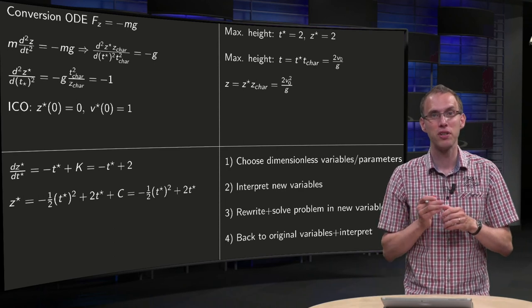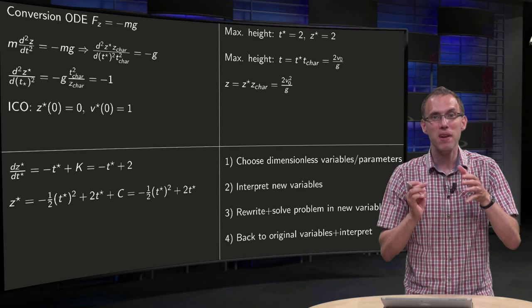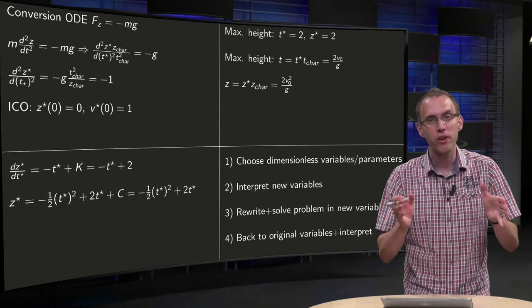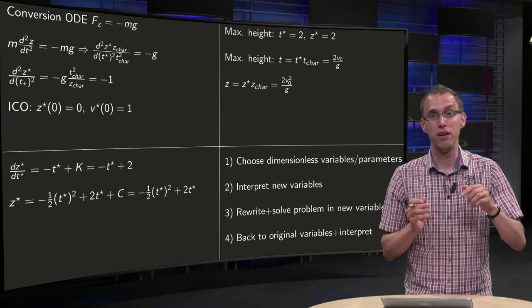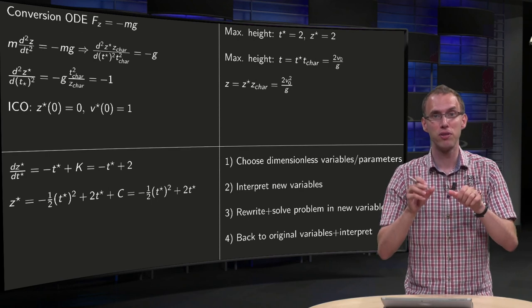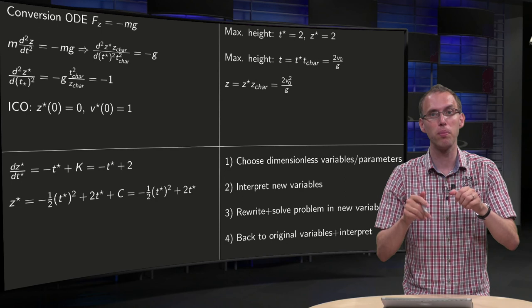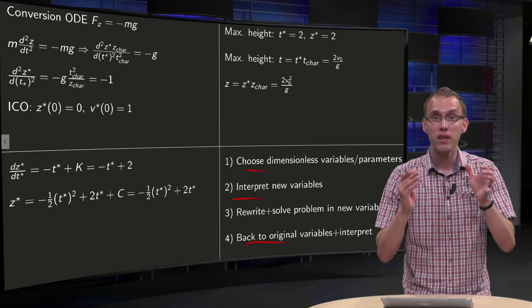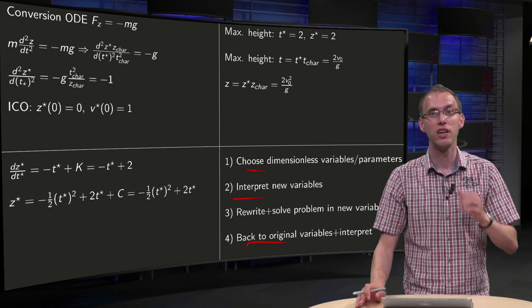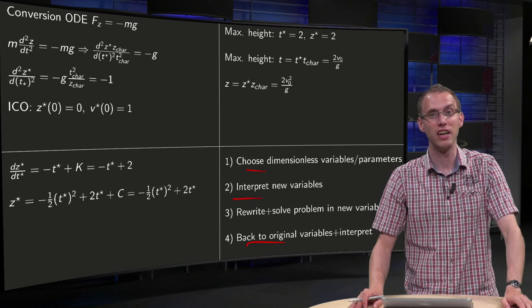So, dimensionless variables make your model equations a bit easier. However, the physics is now transferred from solving the problem to those steps 1, 2 and 4. So, using dimensionless variables requires a lot of physical insight in those steps.